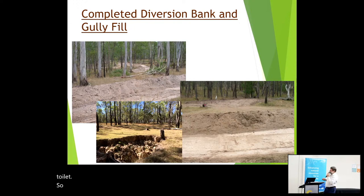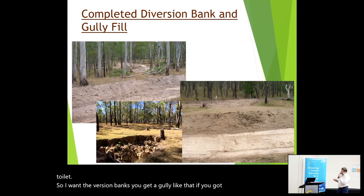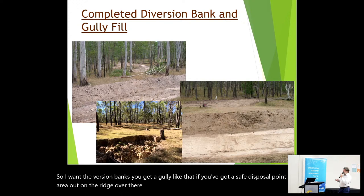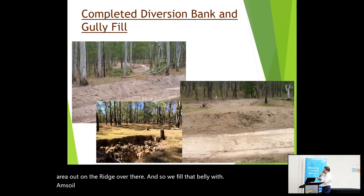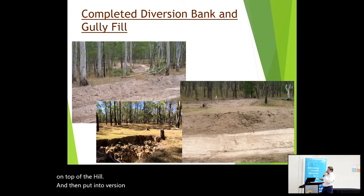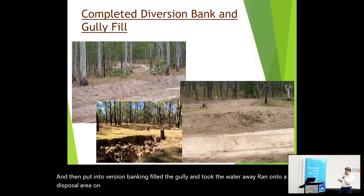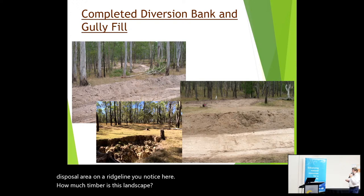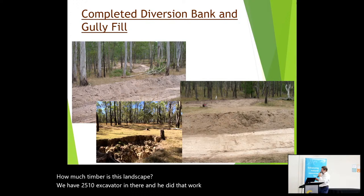For diversion banks: if you've got a safe disposal point out on the ridge, we filled that gully with some soil, made a dam on top of the hill, put the diversion bank in, filled the gully and took the water away around onto a safe disposal area on a ridge line. A 25-tonne excavator did that work without removing more than half a dozen trees — it's amazing what you can do in a treed landscape if you want to keep the trees in there.